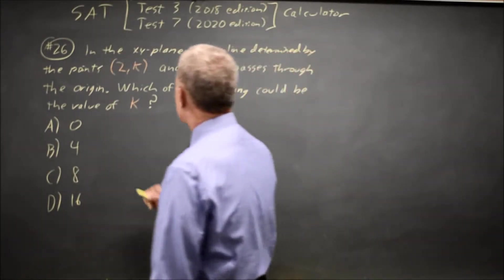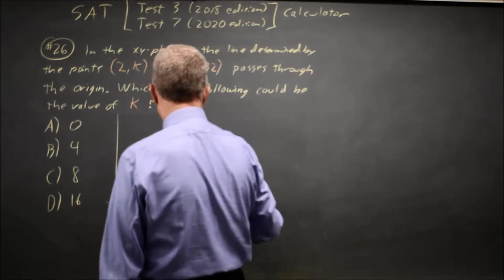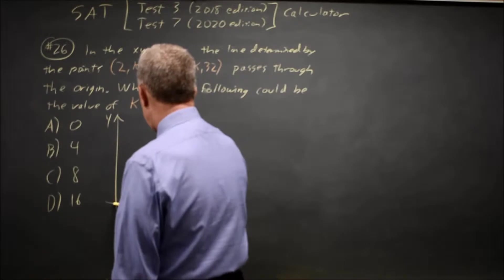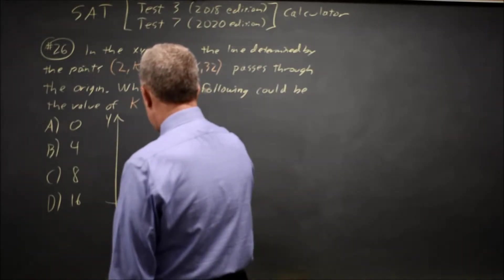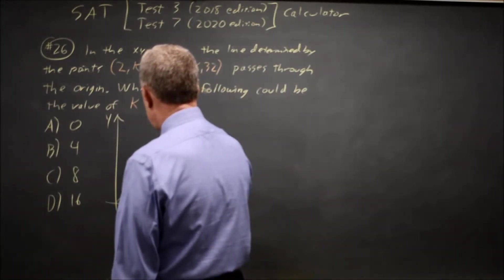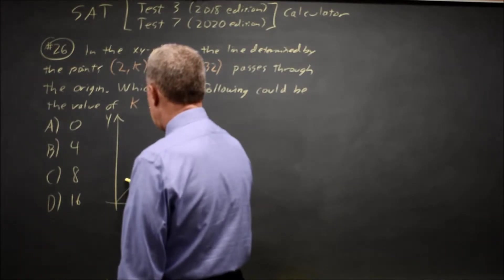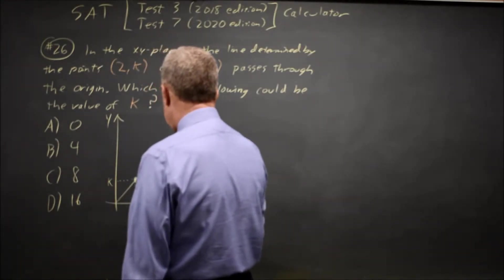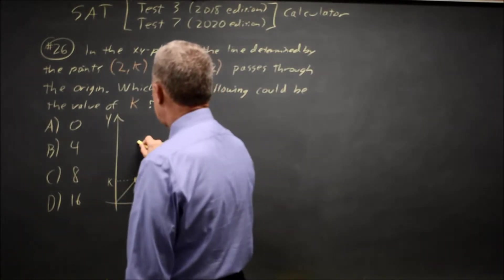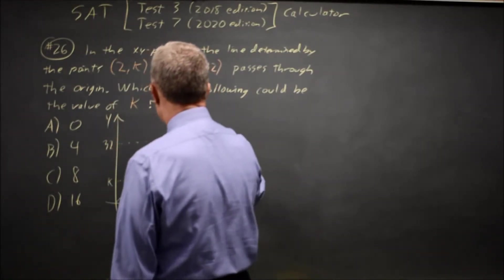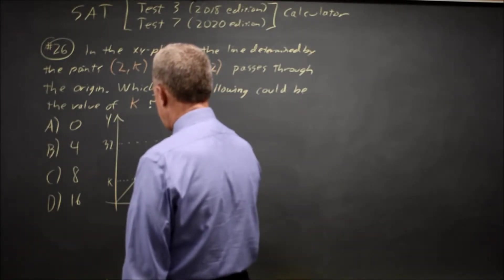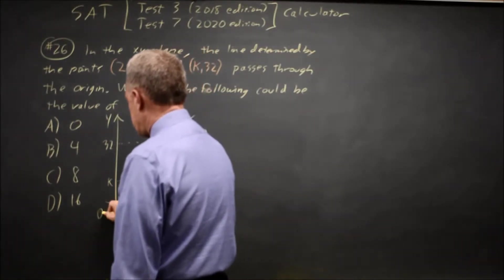So let's draw a sketch of that situation. Let's draw the line first. So this x is 2 and the y is k, and this x is k and the corresponding y is 32. This is the point (k, 32) and this is the point (2, k) and this is the point (0, 0).